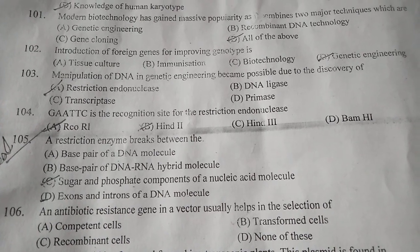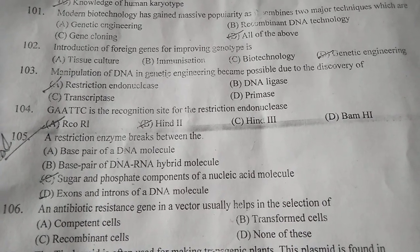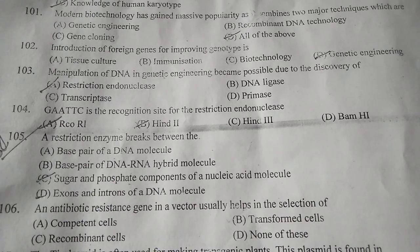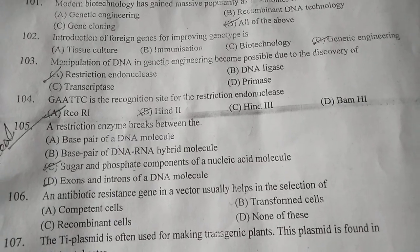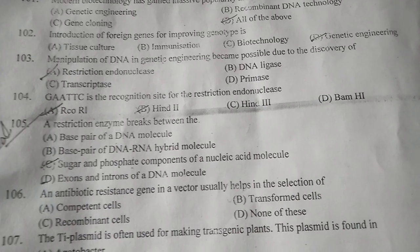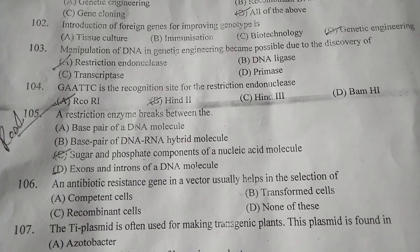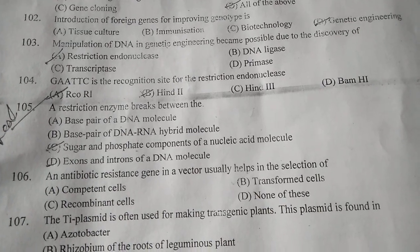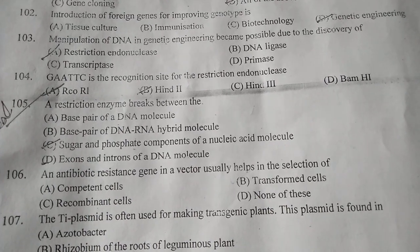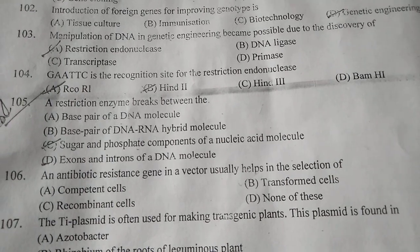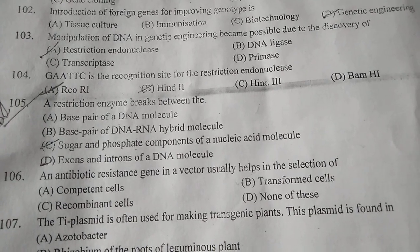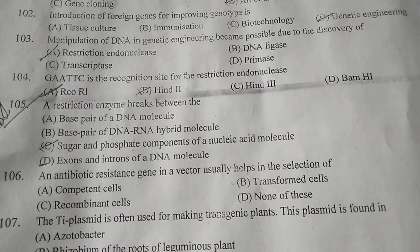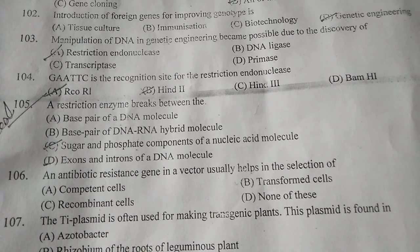I am reading from my mobile, so not very clearly. Sorry for the mistakes. You need the questions of this topic and answers, not my language. Question number 105: A restriction enzyme breaks between — C is the correct answer — the sugar and phosphate component of the nucleic acid molecule. So C is the correct answer for question 105.